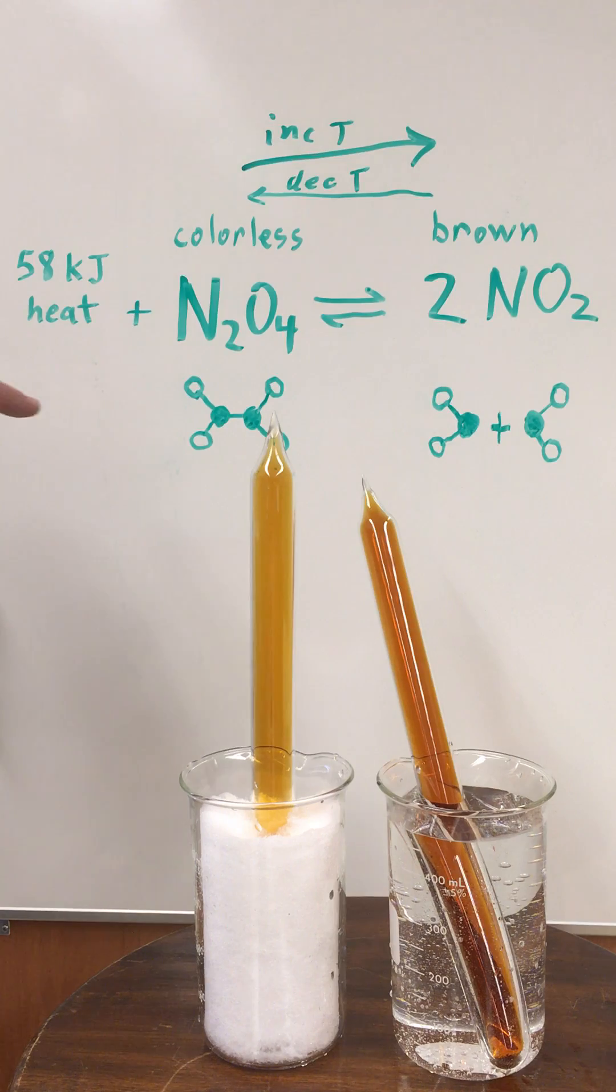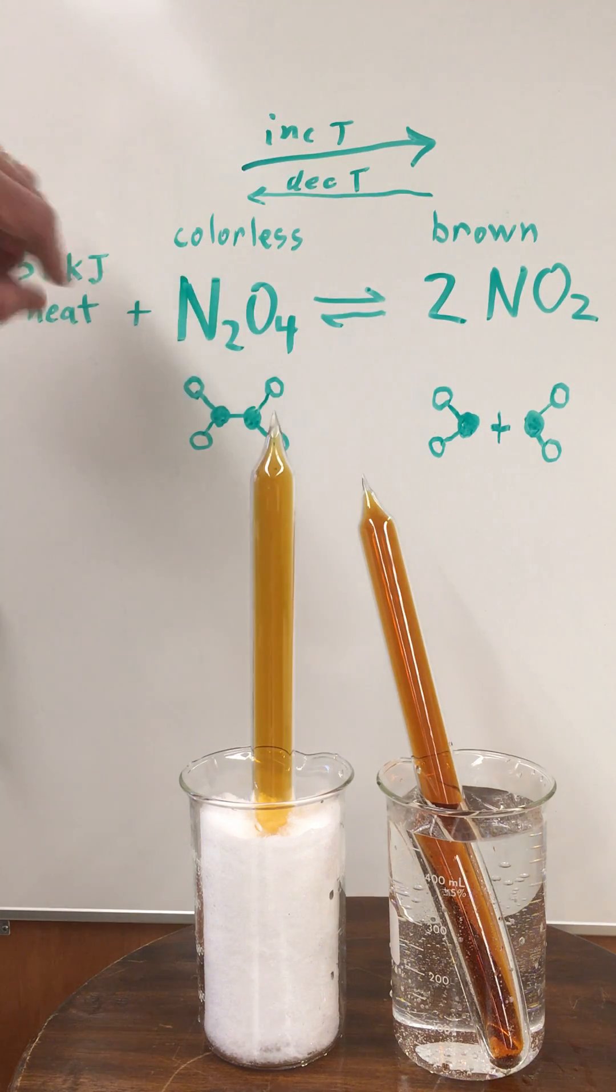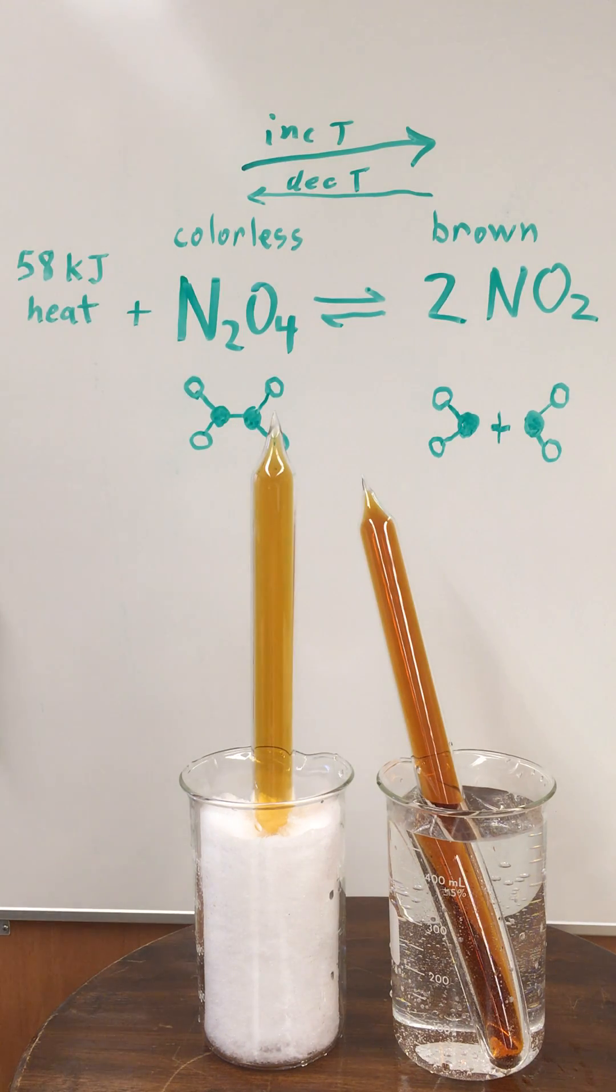As we decrease the temperature, we see the system shifting more towards a colorless appearance, and that's because we're producing more dinitrogen tetroxide, which is colorless.